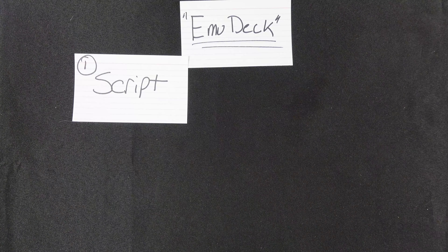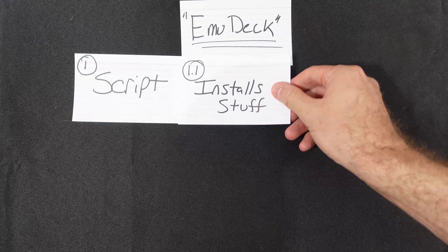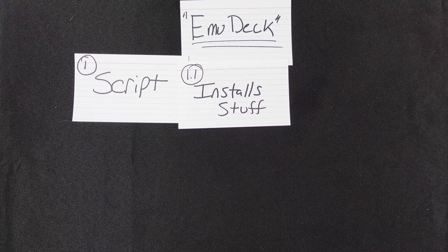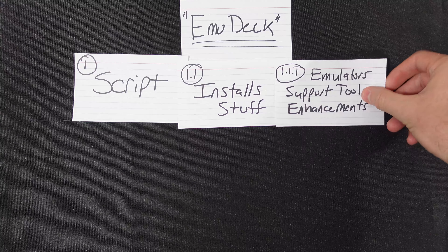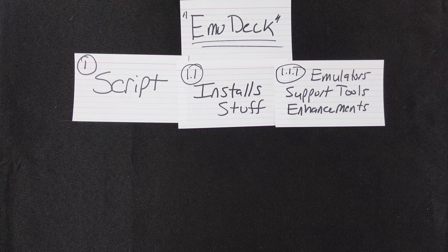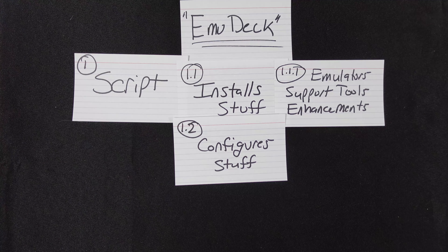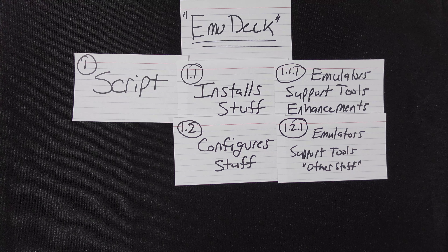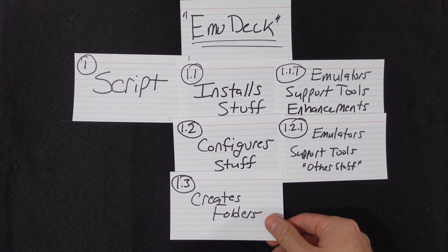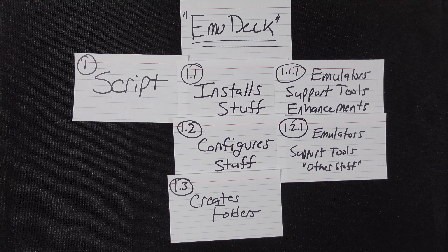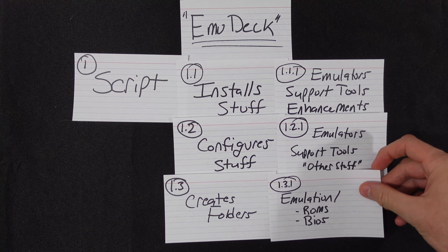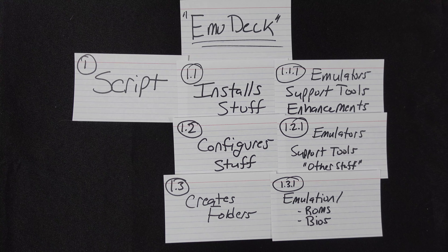First, it installs stuff. It automates a lot of the manual work you would otherwise have to do on your own. These things include emulators, support tools, and enhancement apps, all designed to make your emulation experience better. Once it's done installing stuff, it configures stuff — the aforementioned emulators, support tools, and enhancement apps. It also creates the necessary file structures, folders for holding all the goodies it downloads, and locations for end users to drop BIOS files or ROM files. It's just one less thing that the end user needs to do.